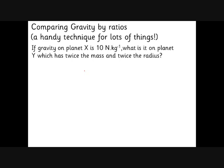Here is our ratios technique, which is handy for a lot of different situations. We're going to consider a planet like the earth, which we've called planet X, where gravity is 10 newtons per kilogram. What will it be on a planet Y which has twice the mass and twice the radius? It's quite handy to draw a little picture first. Planet X has gravity G, and planet Y has twice the radius and twice the mass, giving a new gravity G dash.